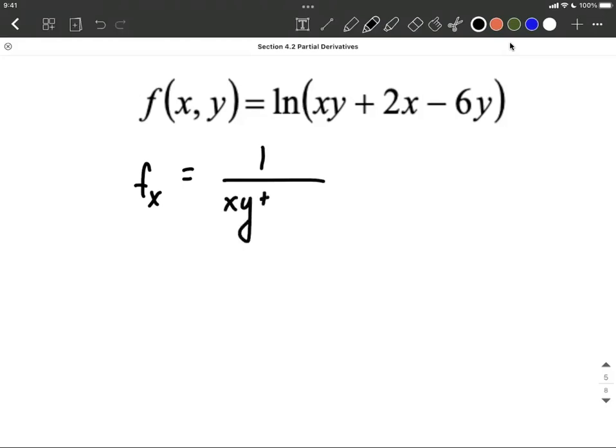we have a complex function on the inside. So chain rule says 1 over, copy down the inside function, but then we have to multiply by the derivative of that inner function.